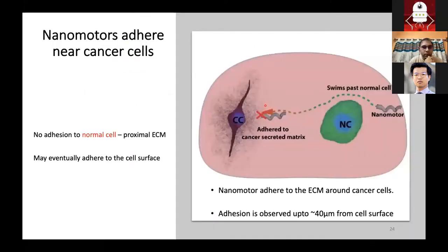When we did our experiment, we found something quite interesting. One of the major observations was that nanomotors can swim past the normal cell and when they approach the cancer cell, they get adhered to cancer-secreted matrix. This adhesion was observed up to 40 microns from the cell surface. Nothing of this sort was observed near a normal cell. There is no adhesion near a normal cell. However, if a nanomotor goes and lands on a normal cell, it might get adhered. And I will come to why that happens. That was crucial in figuring out what's happening near a cancer-secreted matrix.